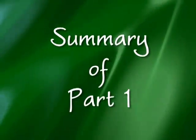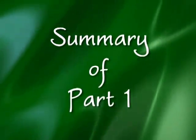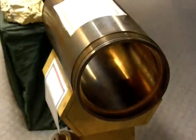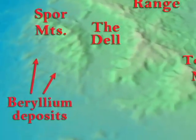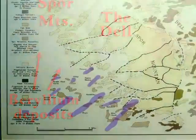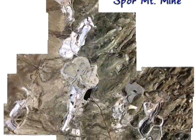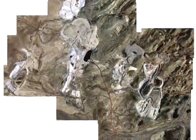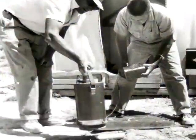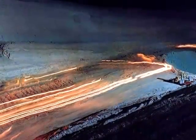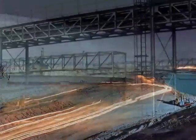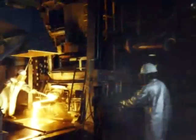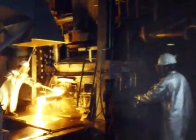You now know where beryllium comes from, its source minerals, its uses, and the geologic history of the bertrandite deposits in the Spore Mountains of Utah. In part two, we'll continue to explore how beryllium is unearthed, by looking at the history of mining operations, how bertrandite is mined and refined today, and its health hazards.